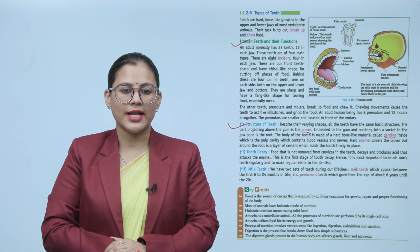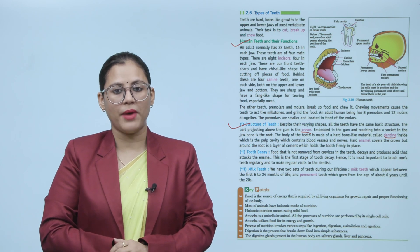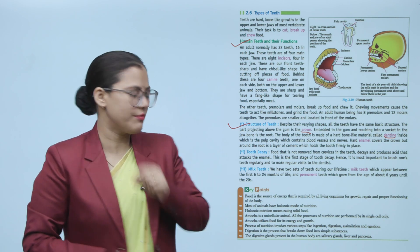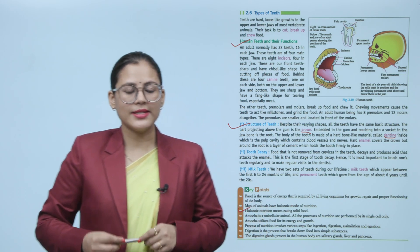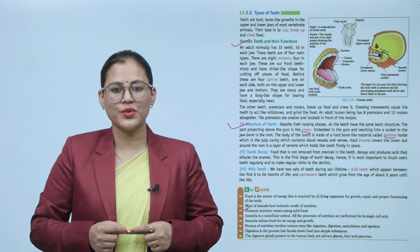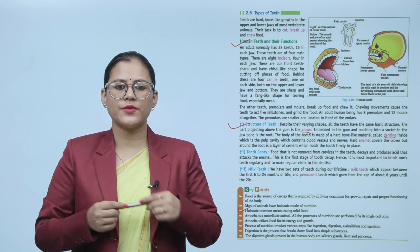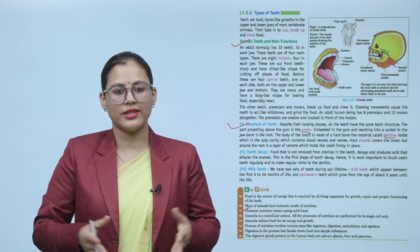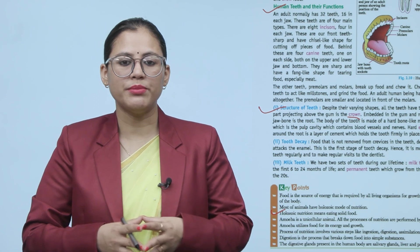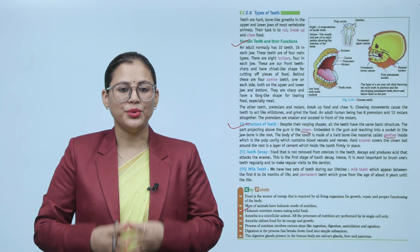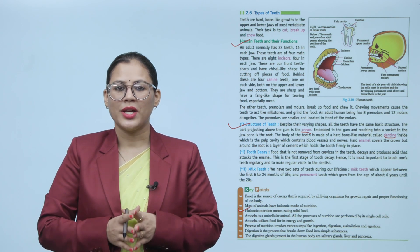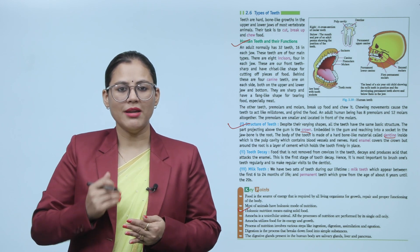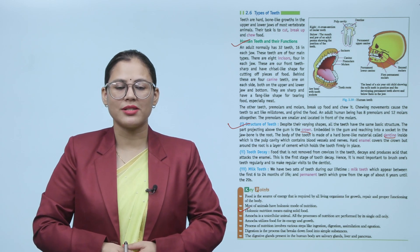Key points: Food is a source of energy required by all living organisms for growth, repair and proper functioning of the body. Most animals have a holozoic mode of nutrition, which means eating solid food. Amoeba is a unicellular animal; all processes of nutrition are performed by its single cell only. Amoeba utilizes food for energy and growth. The process of nutrition involves various steps: ingestion, digestion, absorption, assimilation and egestion. Digestion is a process that breaks down food into simple substances. The digestive glands present in the human body are salivary glands, liver and pancreas. I hope you understand this chapter on nutrition in animals.